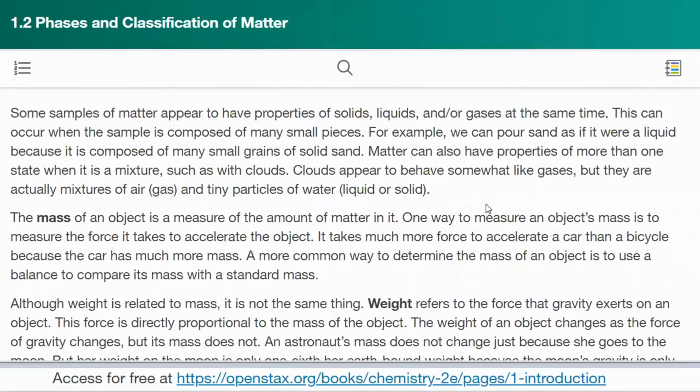Some samples of matter appear to have properties of solids, liquids, and or gases at the same time. This can occur when the sample is composed of many small pieces. For example, we can pour sand as if it were a liquid because it is composed of many small grains of solid sand. Matter can also have properties of more than one state when it is a mixture, such as with clouds. Clouds appear to behave somewhat like gases, but they are actually mixtures of air (gas) and tiny particles of water (liquid or solid).